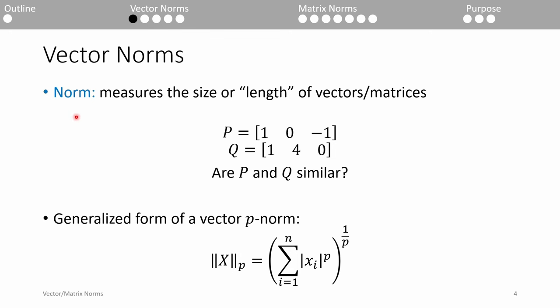Put simply, a norm is a way to measure the size of a vector or matrix. In essence, norms allow us to quantify its magnitude.